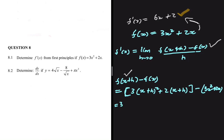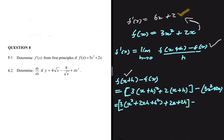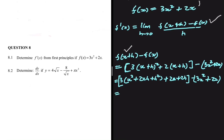Expanding, x plus h squared gives x squared plus 2xh plus h squared. So we have 3 multiplied by that, plus 2 multiplied by x plus h, minus 3x squared plus 2x. Multiplying out by 3 gives 3x squared plus 6xh plus 3h squared, plus 2x plus 2h, minus 3x squared minus 2x.